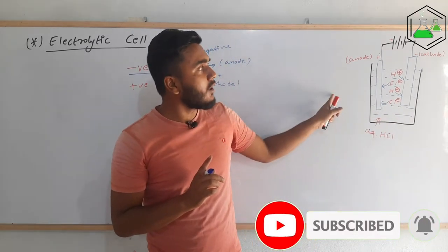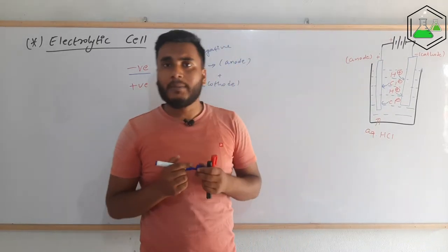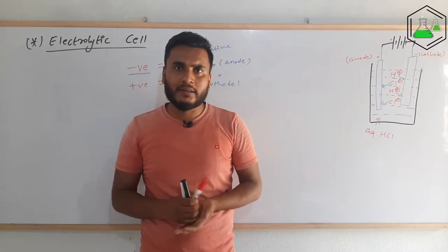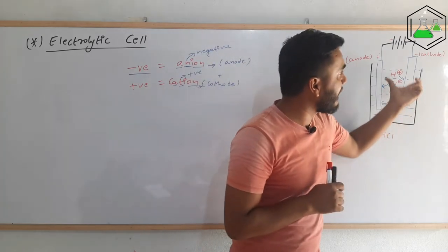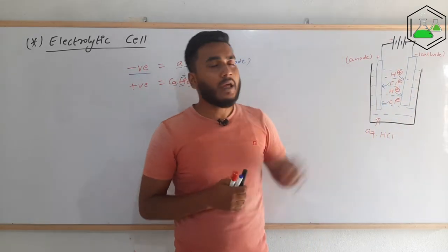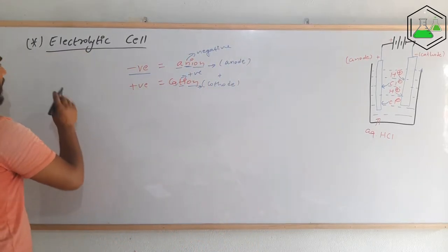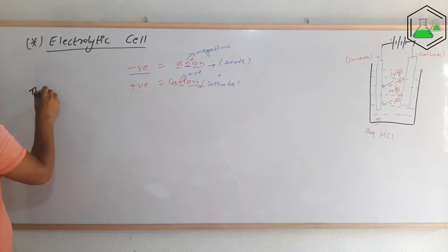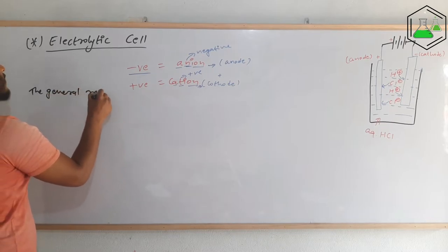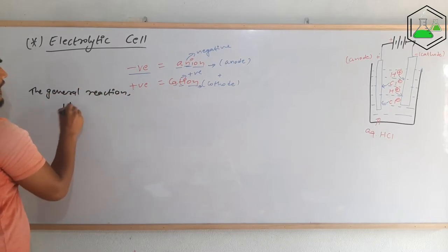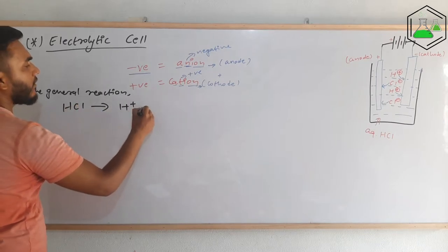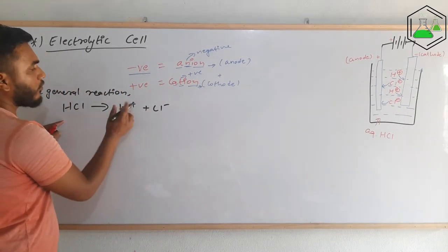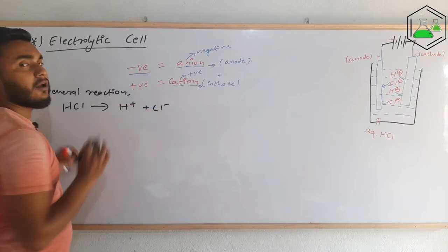This is the working of an electrolytic cell. When electricity passes, hydrochloric acid breaks to give H+ and Cl−. They move towards the oppositely signed electrodes, which are named cathode and anode. The general reaction is: HCl → H+ + Cl−. That is, when electricity is passed, hydrochloric acid breaks into hydrogen ion H+ and chlorine ion Cl−.